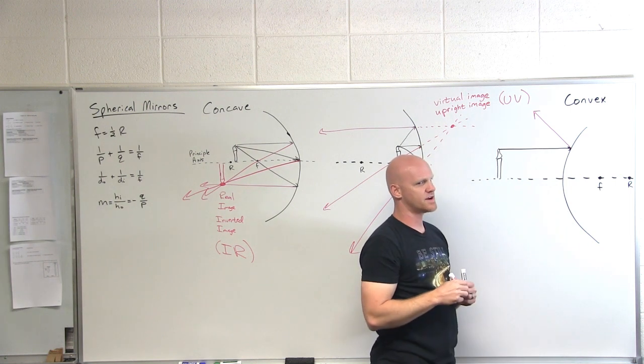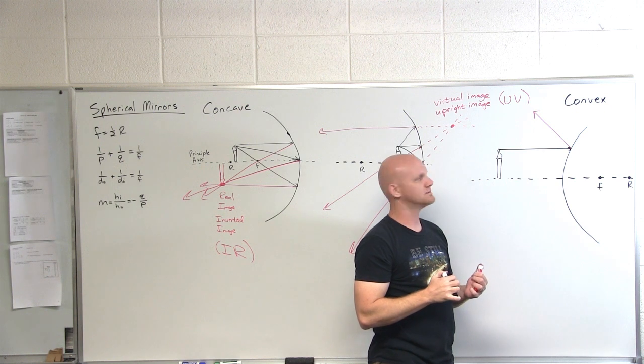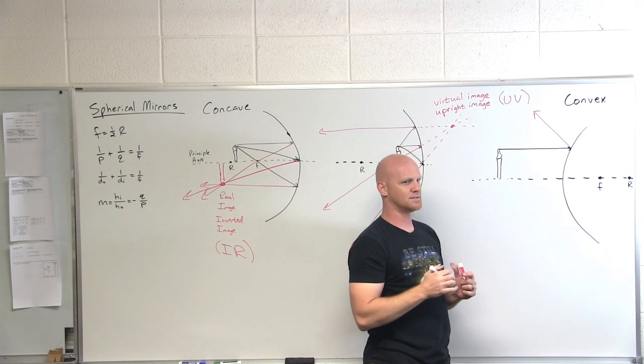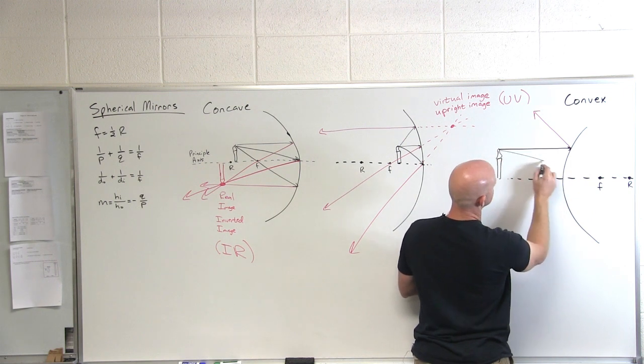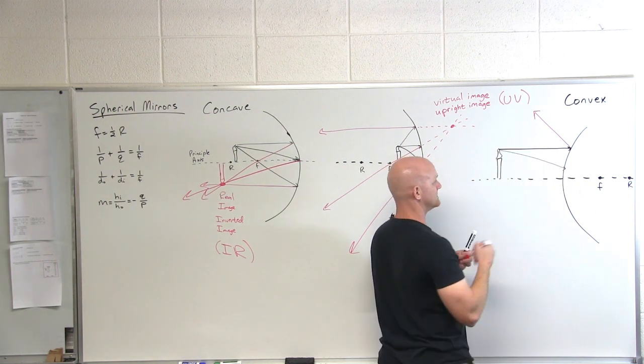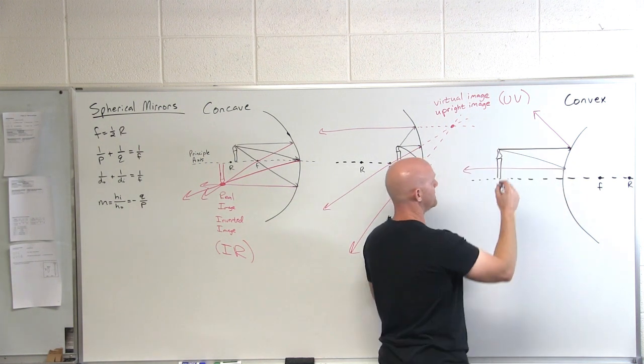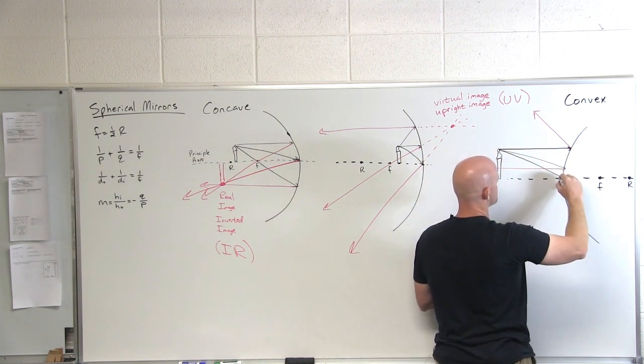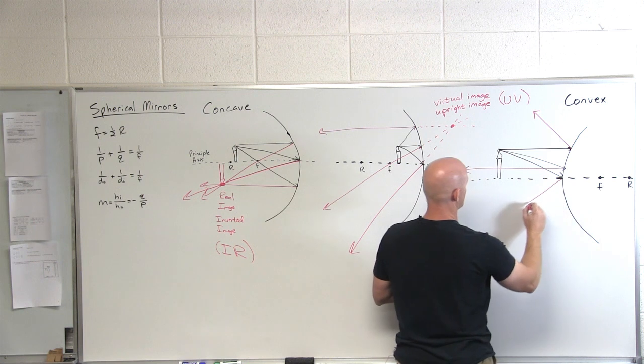Now where's the next ray? We draw it towards the focal point. So in this case, I'm heading right for that point. And then I bump into the mirror. And where does that one get reflected back? Parallel to the principal axis. And then if I wanted to, I could draw one more. And that's to the vertex on the principal axis. And that one just gets reflected at exactly the same angle.